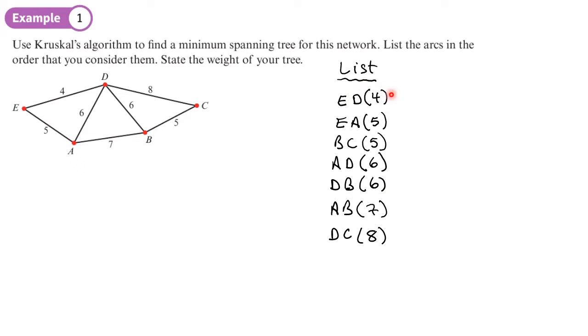We know that we start with the very first edge in our list. So I'm going to list it there and draw that edge. So E, D, and 4. Now I'll go to the next one on my list, which is EA. I can add EA even if it's somewhere else in the diagram.